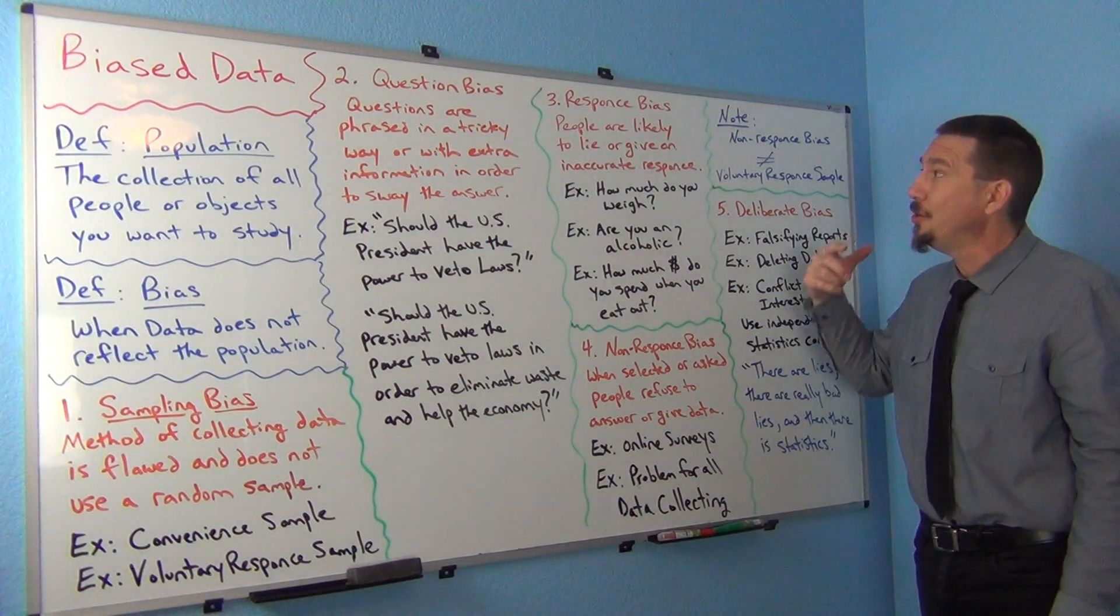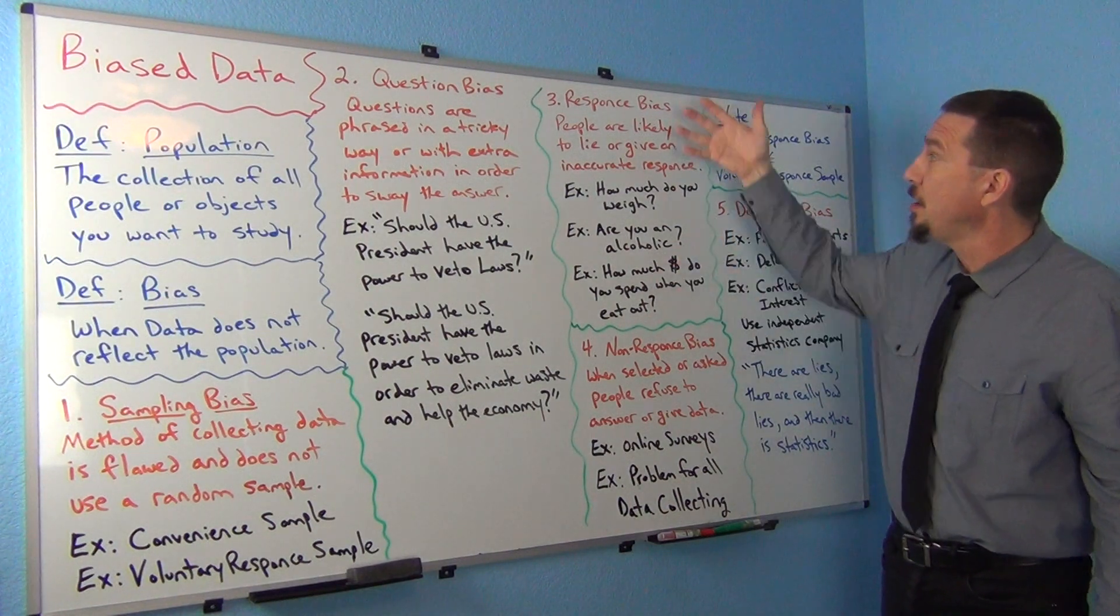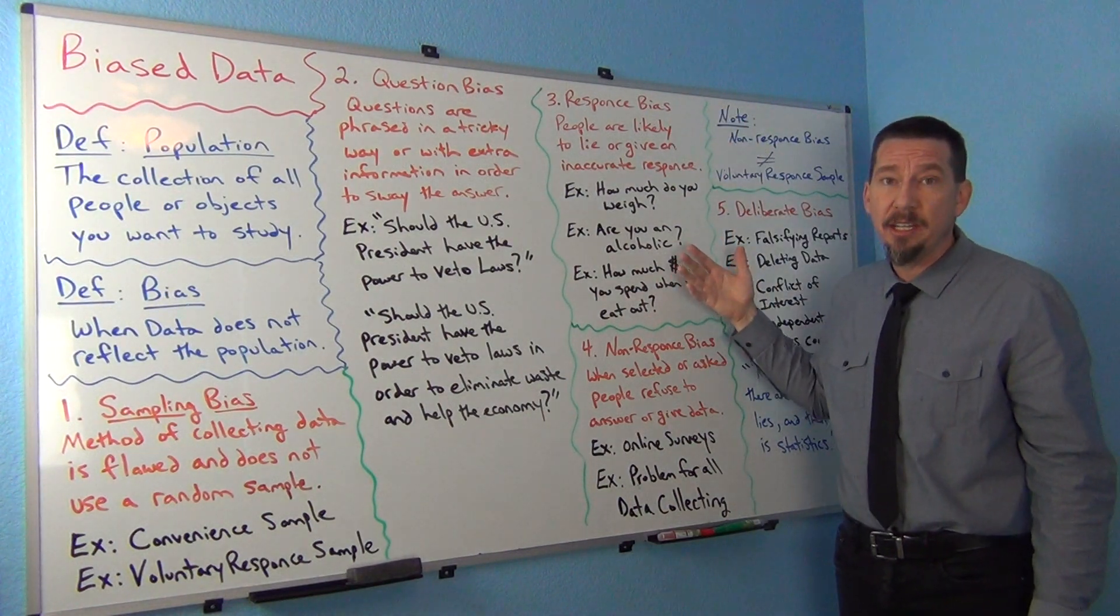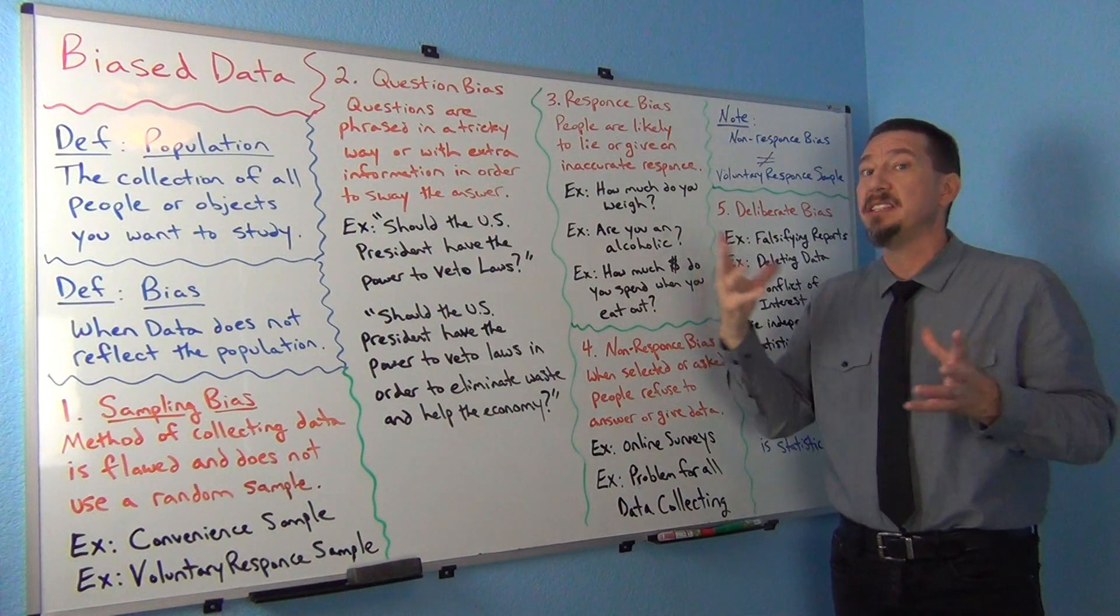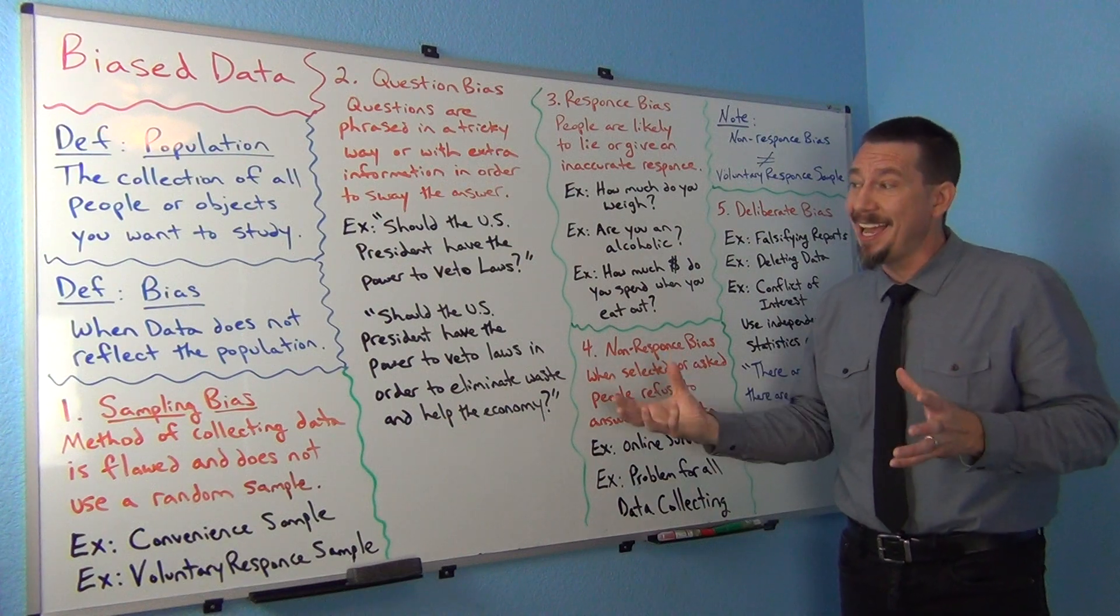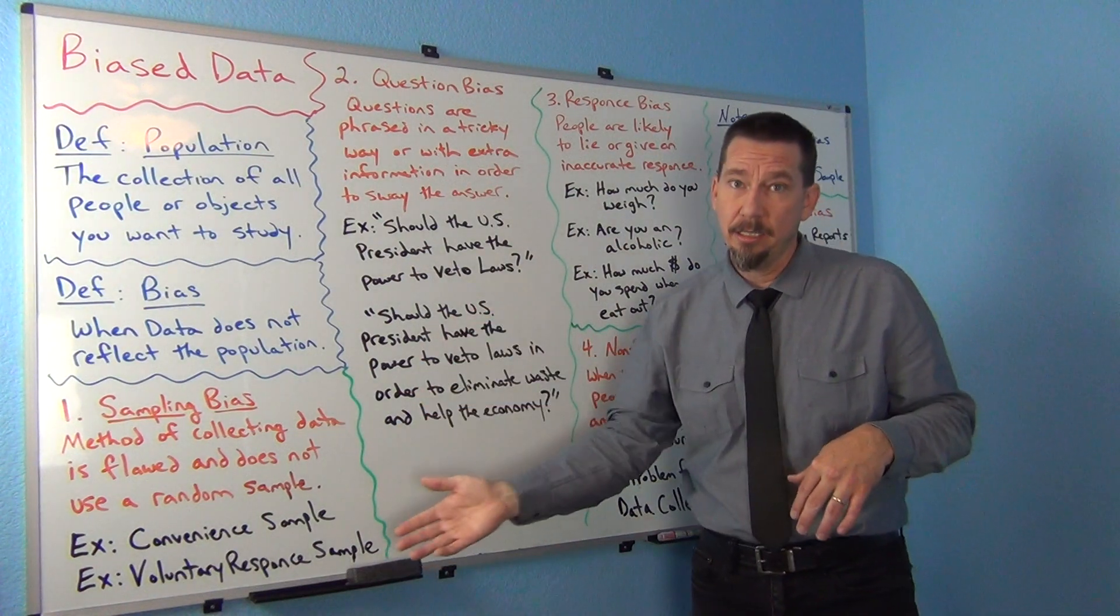Or even just a high percentage of people in the data were lying about their answers. There can be all kinds of reasons why data does not reflect the population besides just the way you collect data. That's why we always have to think about this.